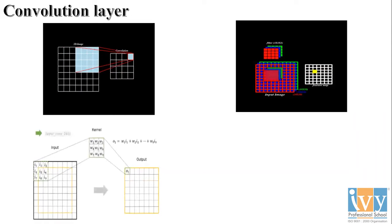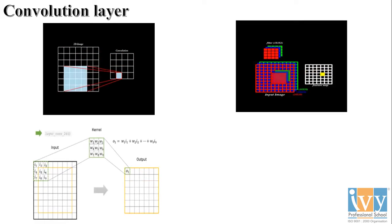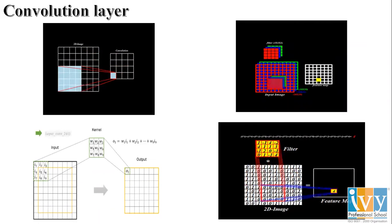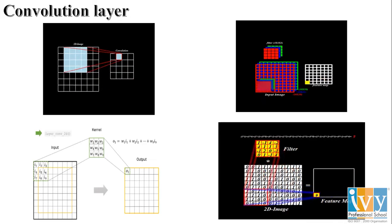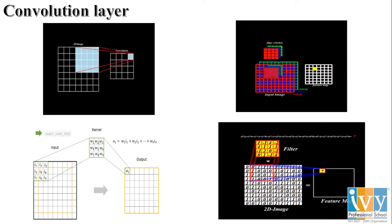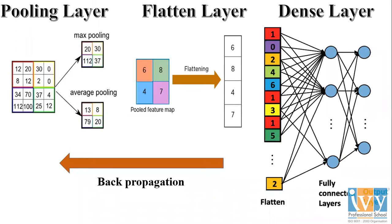We covered the convolution layer and filters running over an image — how computation from an input image using a kernel produces an output image. We then saw the pooling layer, the flattening layer, and finally connecting it to the dense layer which gives the output.